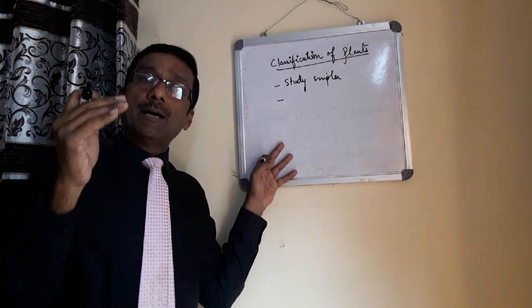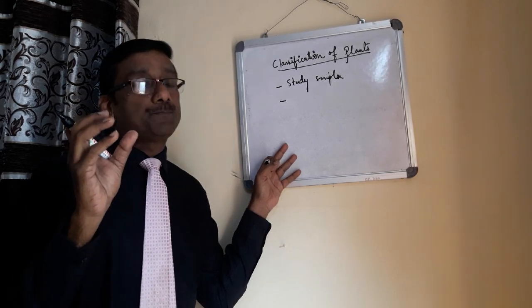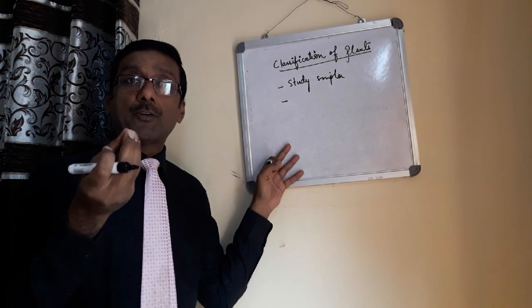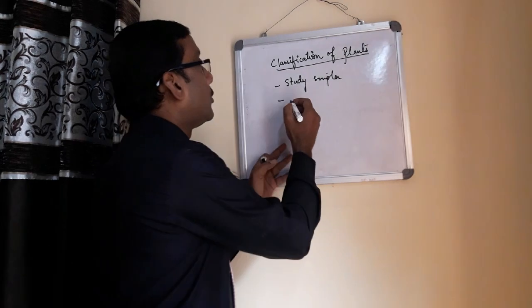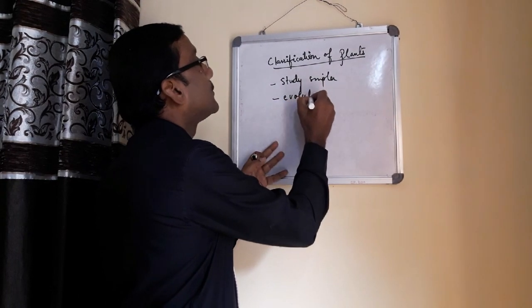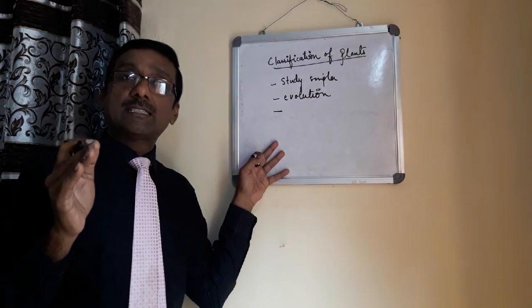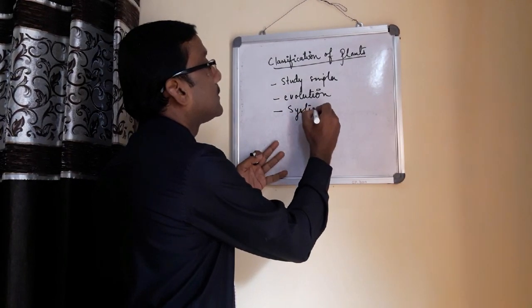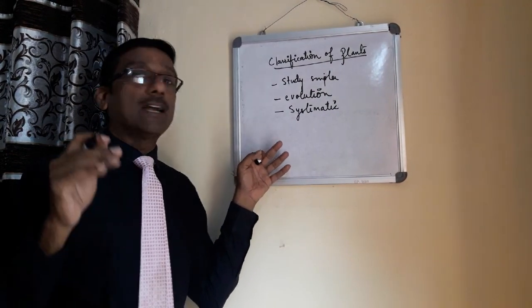Second thing: understanding about each organism, their evolution. From where they have evolved? What is the basic place from where it has been evolved? Evolution of an organism is also there with the help of classification. And the third is to make the study more systematic.